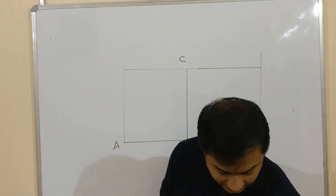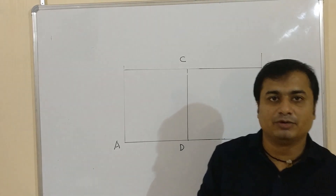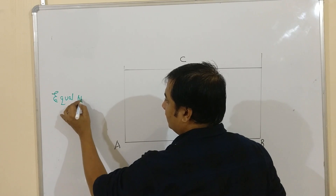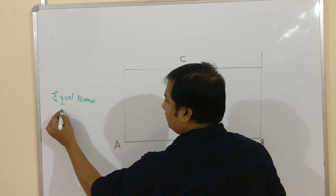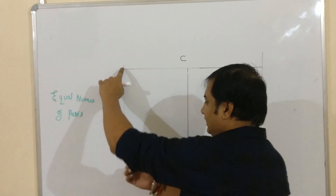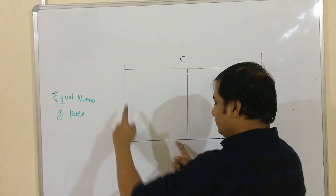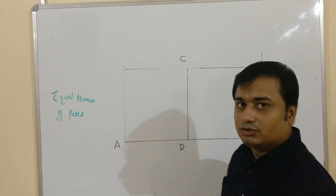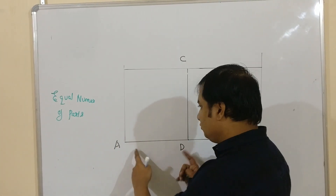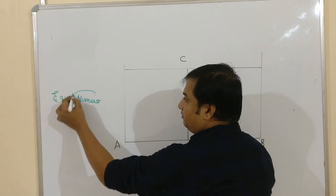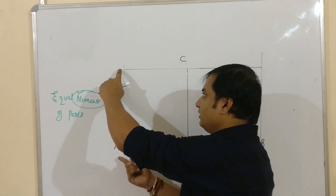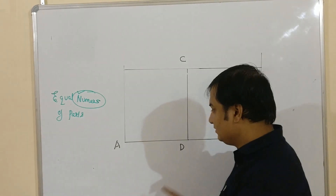We have to divide the vertical line and the horizontal line into an equal number of parts. The numbers of divisions must be equal — if you divide the vertical line into 5 equal parts, you must also divide the horizontal line into 5 equal parts. The numbers should be equal; I am not talking about the distance, but the number of divisions.